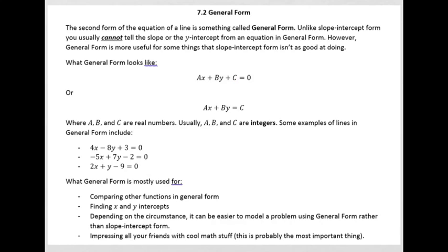A, B, and C are real numbers and are usually integers. In fact, I'll say almost always they are integers. An integer is a whole number that's either positive or negative.